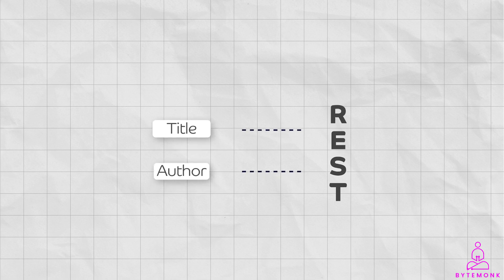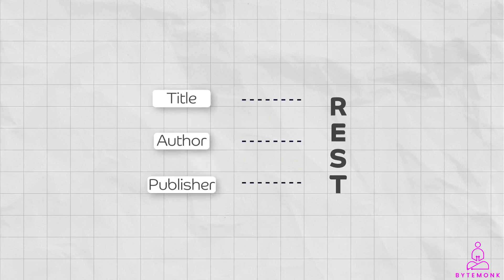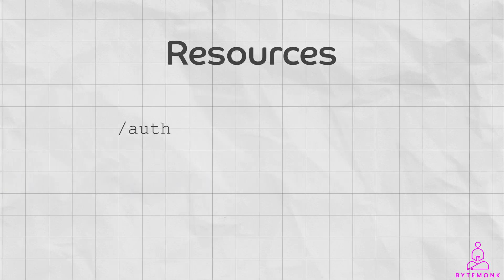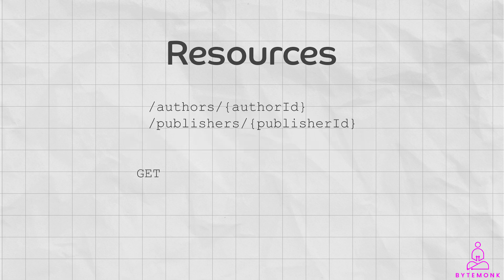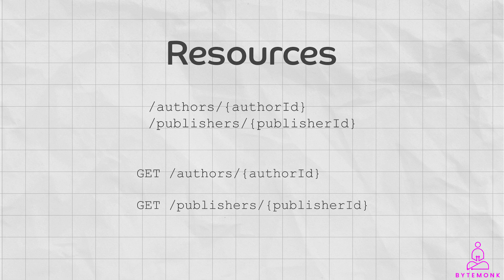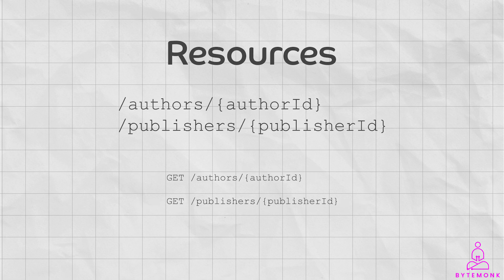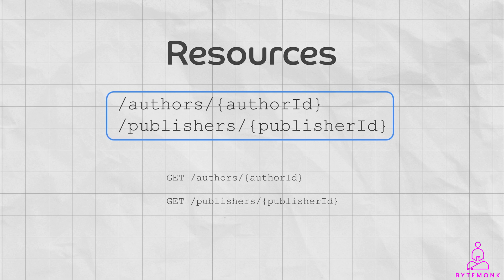If title, author, and publisher are different resources in REST, then you will need to make multiple calls to get all of the data. For example, you might have the following resources: authors and publishers. To get the author and publisher of the book, you would need to make two separate calls — a GET call for authors and a GET call for publishers. However, if author and publisher are contained in a single resource, then you can get them all in a single call.